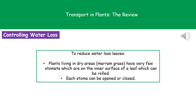If we consider plants that live in very dry areas, things like our marram grass, then they've become specialized by having very few stomata, which are actually located on the inner surface of a leaf. Those leaves are special because they can actually be rolled up, and then any water that evaporates is kept in one area, and that slows the rate of evaporation.